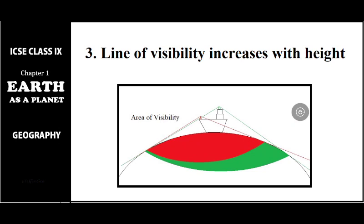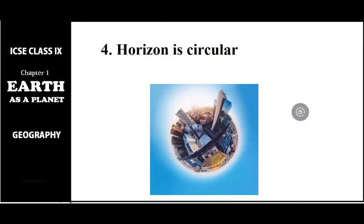The line of visibility can be best observed from a flat area such as an ocean or sea. Imagine two points A and B on a ship — B is slightly higher than A. The area that can be seen from location A is comparatively smaller than the area that can be seen from B. This means the line of visibility increases with height, which is only possible if we are on a curved surface. On a flat surface, whether you stand at A or B you would see the same area.